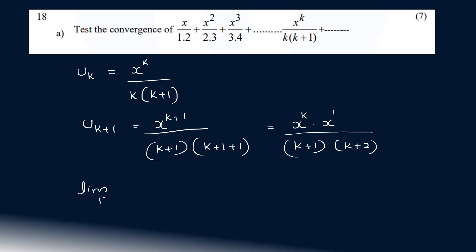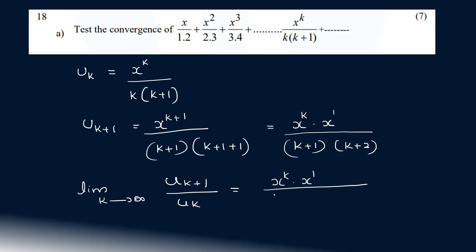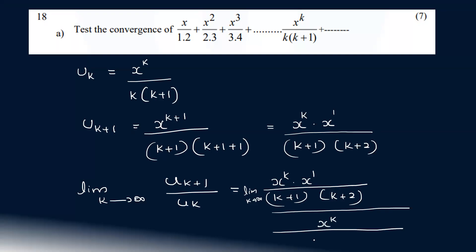As k tends to infinity, uk plus 1 divided by uk equals x raised to k times x raised to 1 divided by k plus 1 into k plus 2, all divided by x raised to k divided by k into k plus 1. The x raised to k terms cancel, and k plus 1 factors cancel.